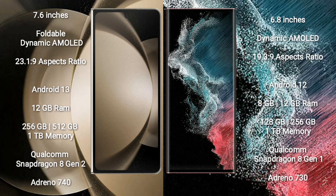The Samsung Galaxy S22 Ultra comes with 8GB or 12GB RAM and 128GB, 256GB, 512GB, or 1TB internal storage. It is powered by the Qualcomm Snapdragon 8 Gen 1 processor with GPU Adreno 730.